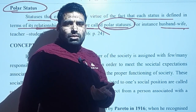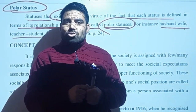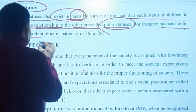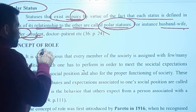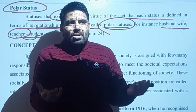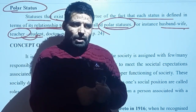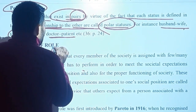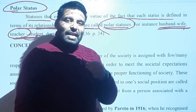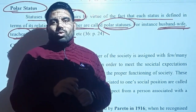For instance, husband and wife — you can only understand 'husband' when there is a 'wife'. Similarly, teacher and student — a teacher is one who teaches students; if there are no students, how can we call someone a teacher? A person becomes a teacher only when we relate them to students. Likewise, doctor and patient — a person is called a doctor when they treat patients; if there are no patients, who will give them the title of doctor? Such statuses which we understand only in pairs — like husband/wife, teacher/student, doctor/patient — are called polar statuses. I hope you have understood these concepts. Thank you so much.